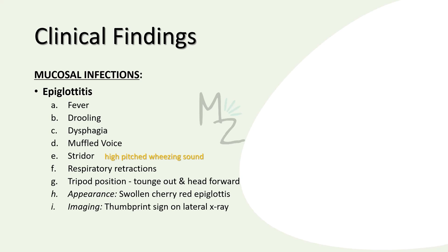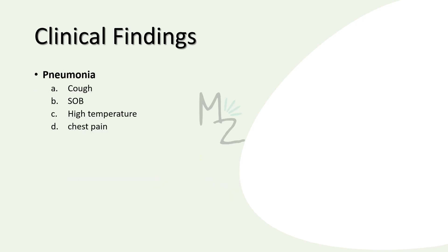Epiglottitis specifically occurs in children. The epiglottis will appear as a swollen cherry red, and there will be a thumbprint sign on lateral X-ray. Epiglottitis can obstruct the airways and is a life-threatening disease of young children caused by Haemophilus influenzae. Pneumonia caused by Haemophilus influenzae occurs in elderly adults, especially those with chronic respiratory disease, and will have symptoms like cough, shortness of breath, high temperature, and chest pain.